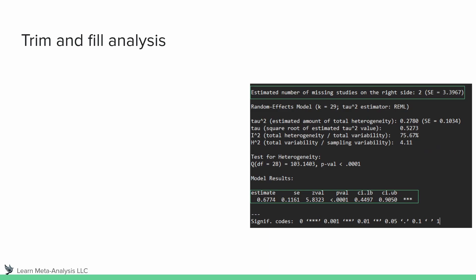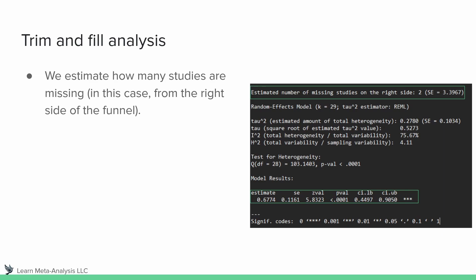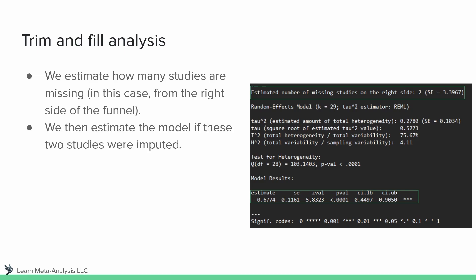Another analysis is the trim and fill analysis. In the output, two things are highlighted: the estimated number of studies that are missing, and the model results. This test essentially estimates how many studies may be missing — in this case, two studies from the right side of the funnel. What's particularly useful is that we can then estimate the model if these two studies were imputed. That adjusted estimate lets us compare to our previous meta-analysis results and see how different or similar they are.